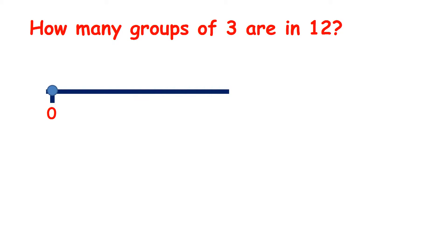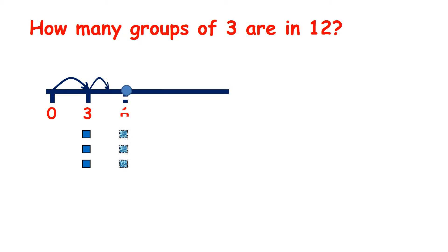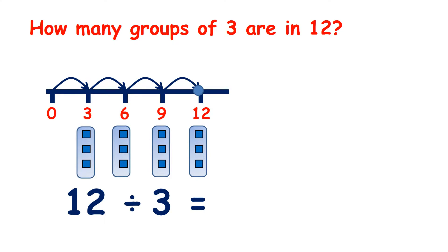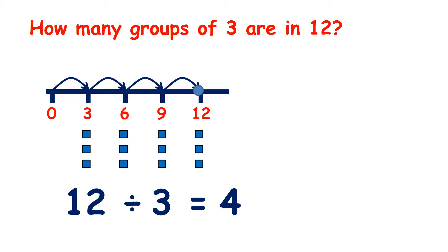How many groups of 3 are in 12? What do we need to do to answer this question? Well, we can count up in steps of 3 until we get to 12. 3, 6, 9, 12. So what we've done here is divide 12 by 3. And we have 4 groups, so our answer is 4.